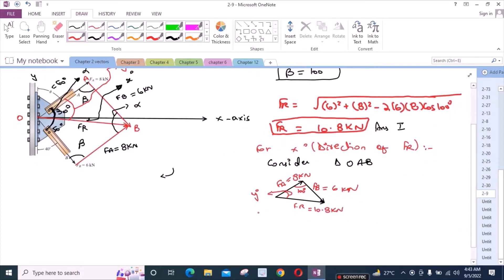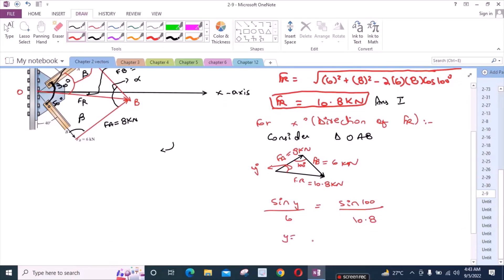We have to find Y degrees using sin Y over FB which is 6 equals sin 100 over FR which is 10.8. So from here, Y equals 33.169 degrees.